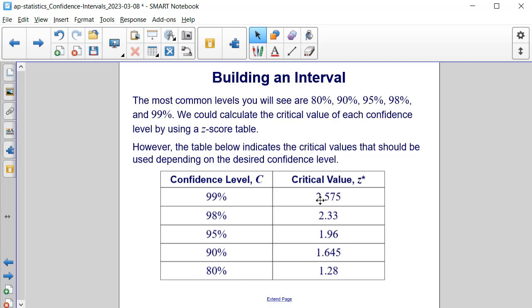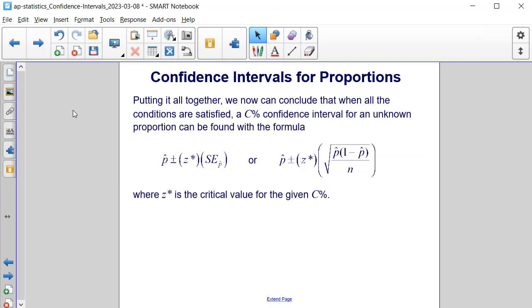For 99%, the critical value for z* will be 2.575. For 98% accuracy, it'll be 2.33. For 95% accuracy, it'll be 1.96. For 90% accuracy, it'll be 1.645. And for 80% accuracy, it'll be 1.28.